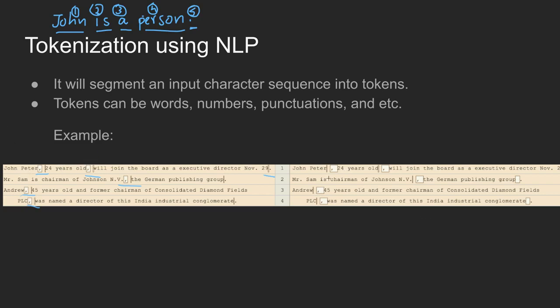Looking at 'John Peter' — there is a space. Here is an extra space, a comma, and then a space. There is an extra space around '929'. We can see a tokenizer is needed here. We train this tokenizer to handle all these cases.